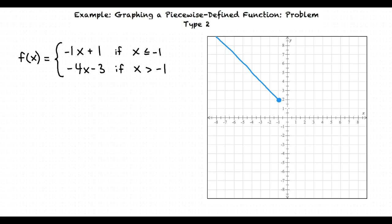Next, we can move on to graphing negative 4x minus 3. This time, our slope is negative 4, because the coefficient of x is negative 4, and our y-intercept is negative 3, because our constant is negative 3.